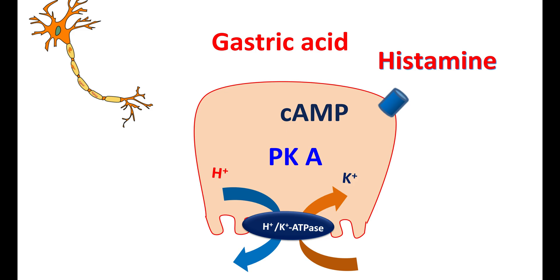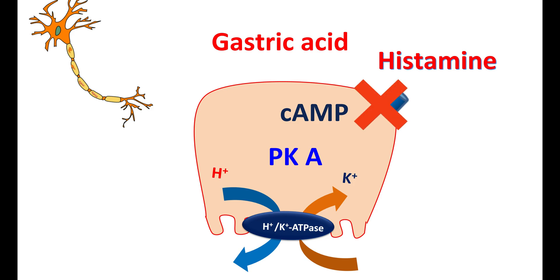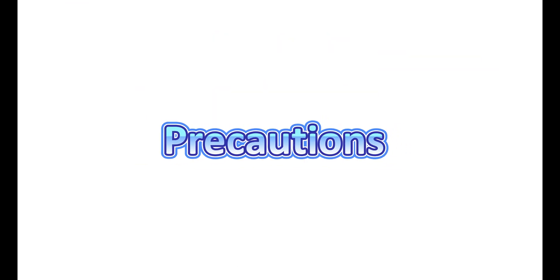Famotidine selectively blocks H2 receptors, acting as an antagonist at these receptors. By binding to them, it inhibits the activation of the adenylyl cyclase system, resulting in decreased production of cyclic AMP and reduced activation of the proton pump. In this way, famotidine reduces gastric acid secretion.